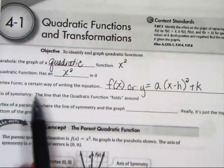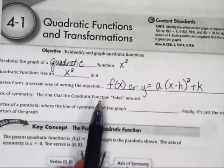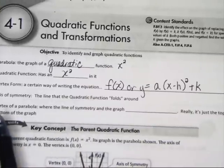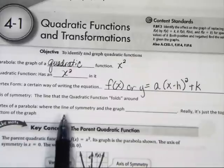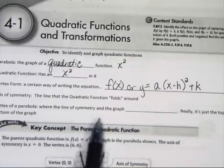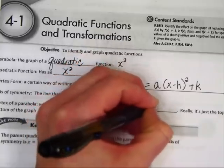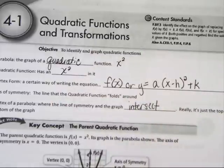The axis of symmetry is the line that the quadratic folds around. In other words, it's like the middle line, the straight vertical line that you can fold it on. The vertex of a parabola is where the line of the symmetry and the graph intersect. Now, that is the technical definition. Really, it's just the top or the bottom of the graph. All right, that's the easier part.